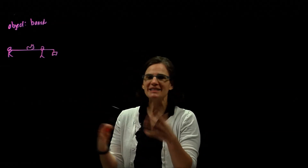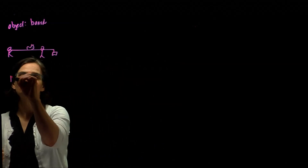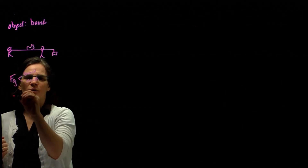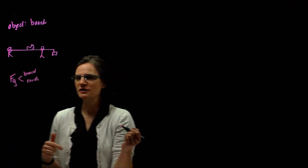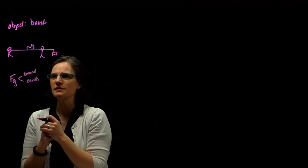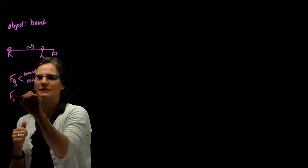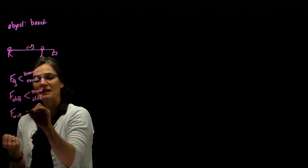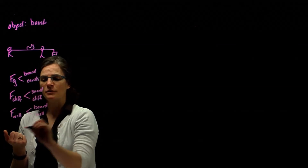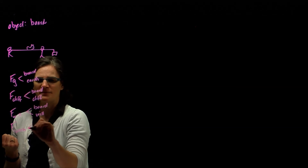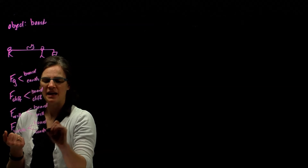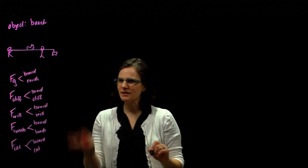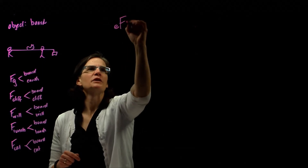What is interacting with the board? We have gravity — that's between the board and the earth. We have Cliff — that's between the board and Cliff. We have Will — that's between the board and Will. We have Will's lunch — that's between the board and the lunch. And we have the cat — that's between the board and the cat. So let's take those interactions and draw our extended free body diagram.